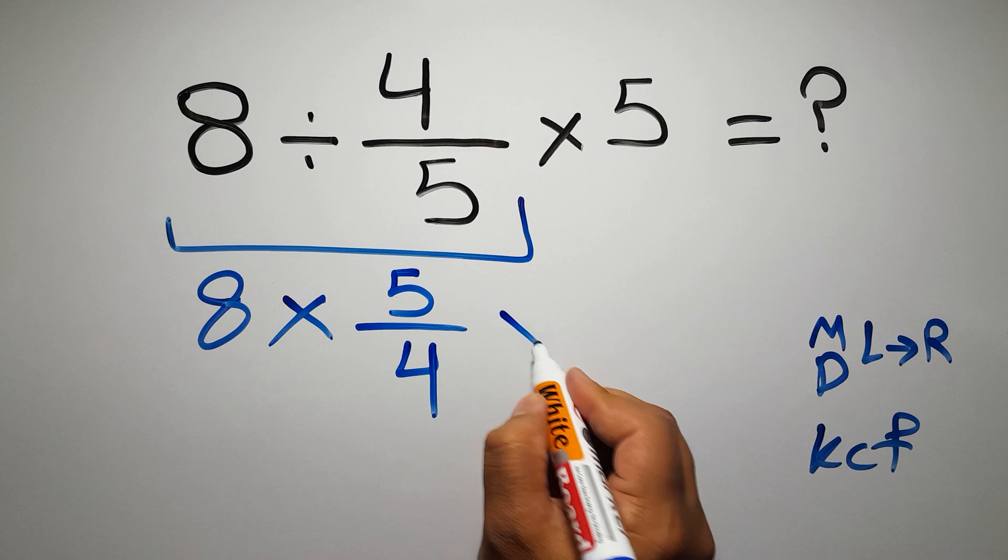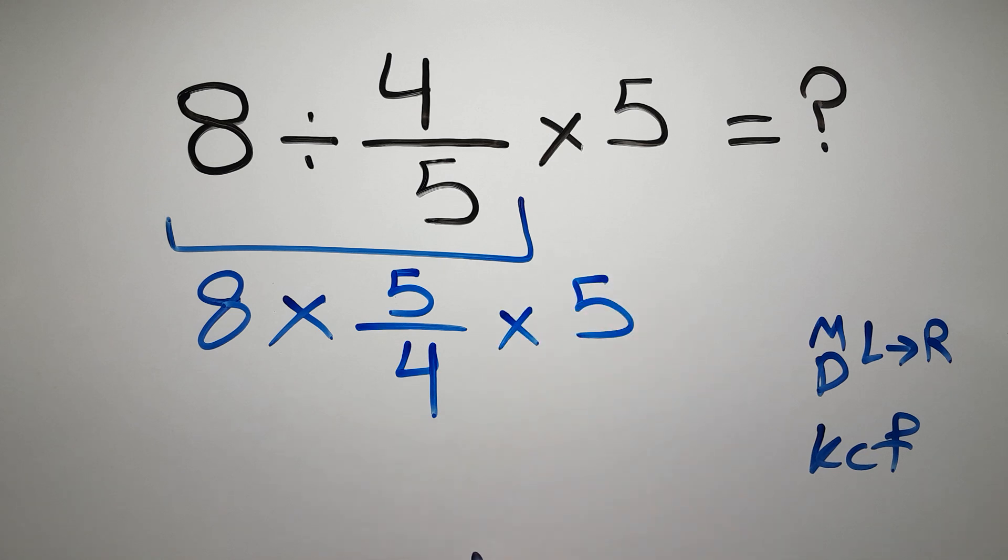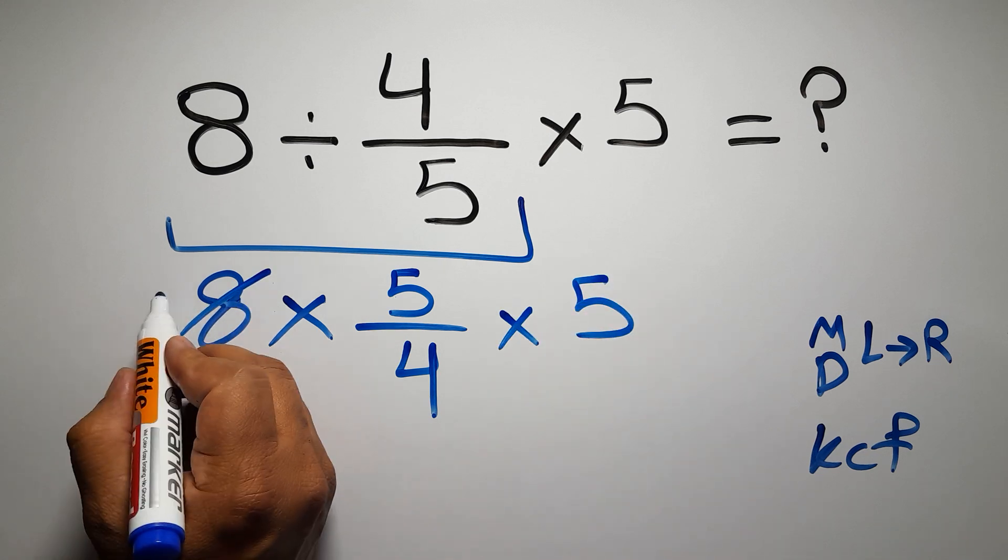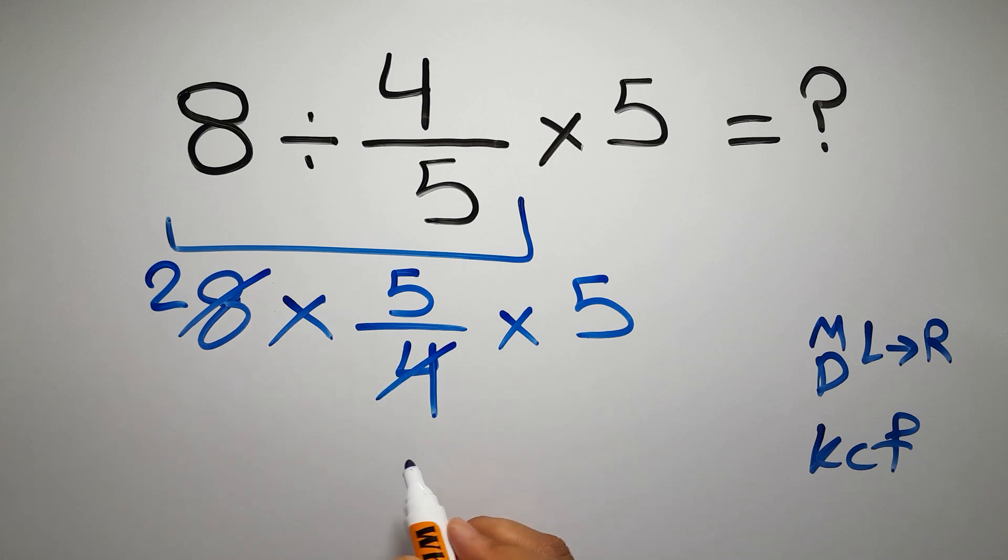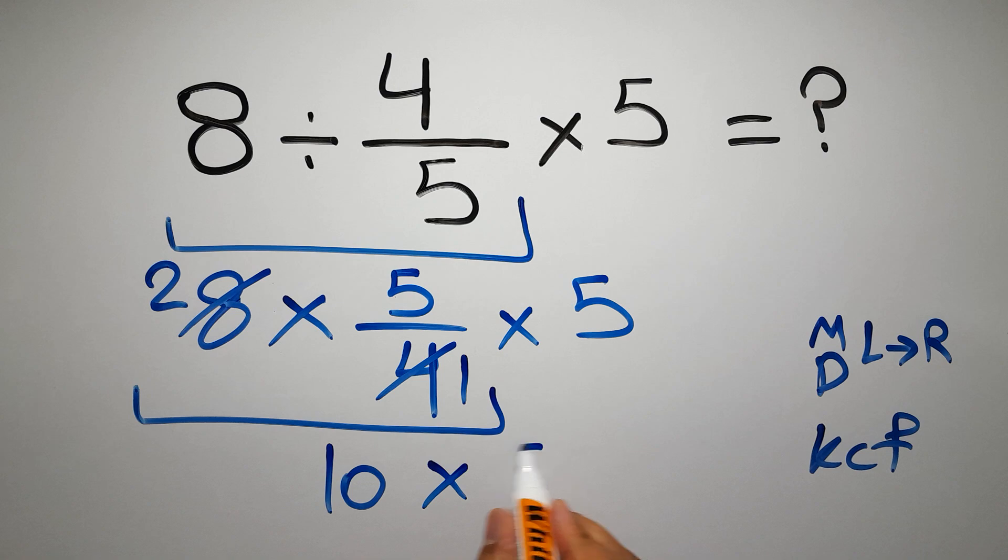And here we have times 5. Now 8 divided by 4 gives us 2, and 4 divided by 4 is just 1. So we have 2 times 5 times 5. 2 times 5 gives us 10, and 10 times 5